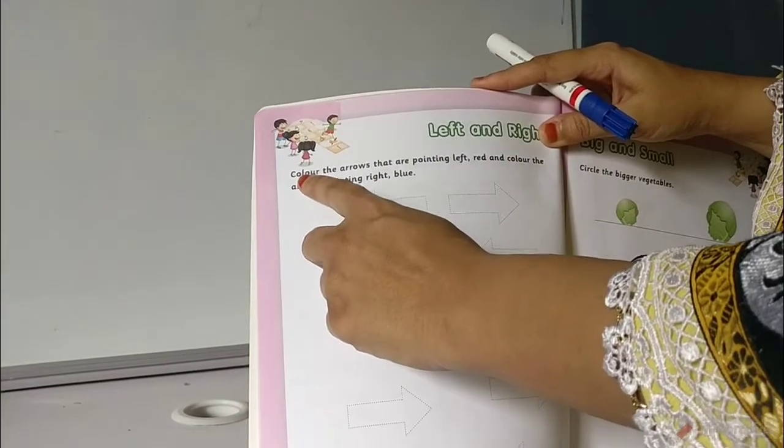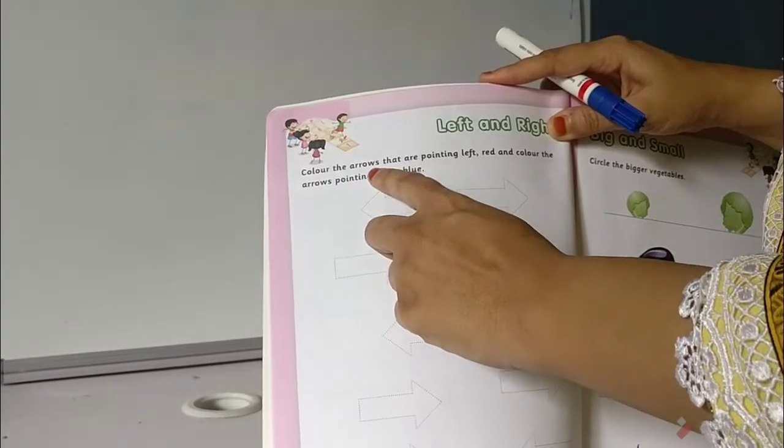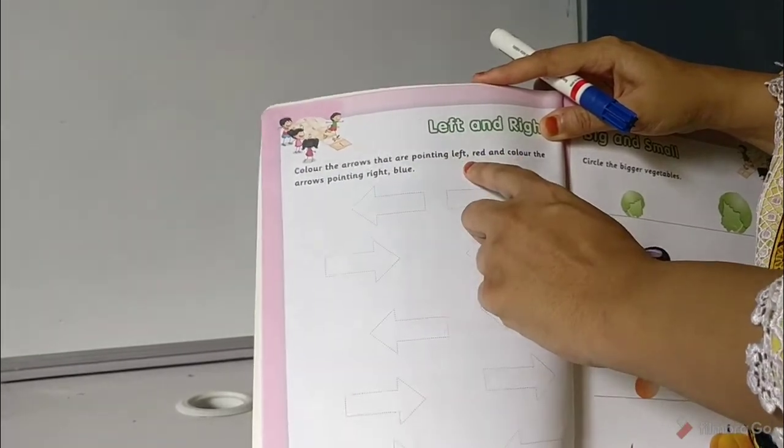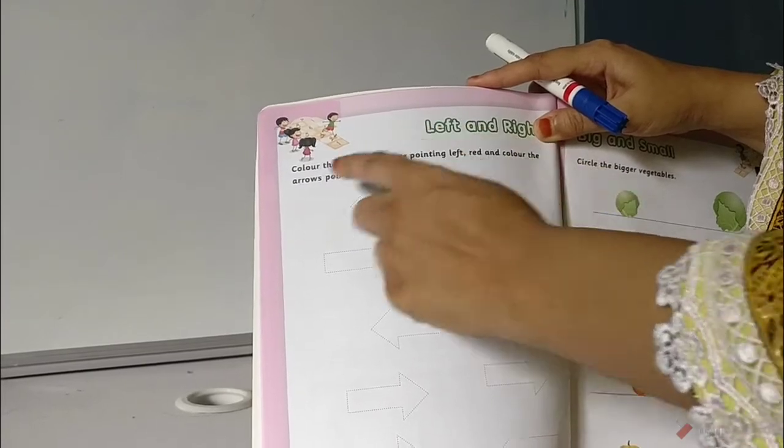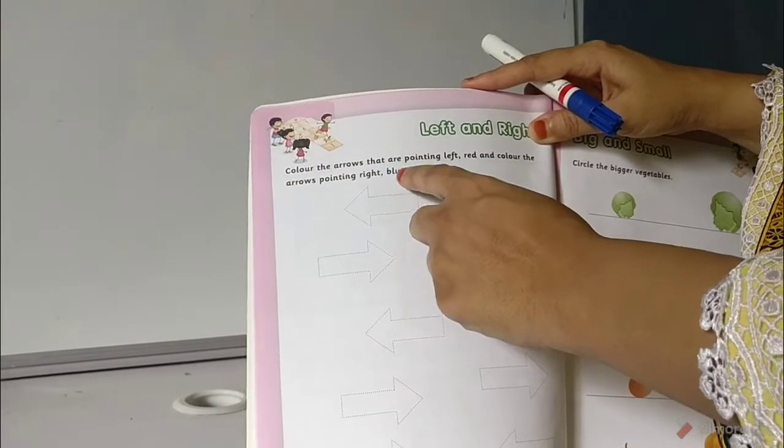So what is written over here? It's written: color the arrows that are pointing left red, and the arrows pointing right blue.